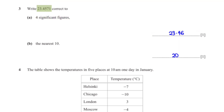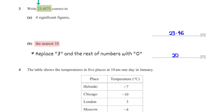Write 23.4571 correct to the nearest 10. First, we mark the digit in the tens column, which is 2. The number next to 2 is 3, and since 3 is less than 5, we leave 2 as it is and replace 3 with 0. So correcting 23.4571 to the nearest 10 gives us 20.